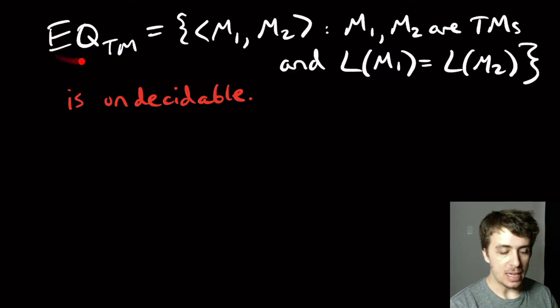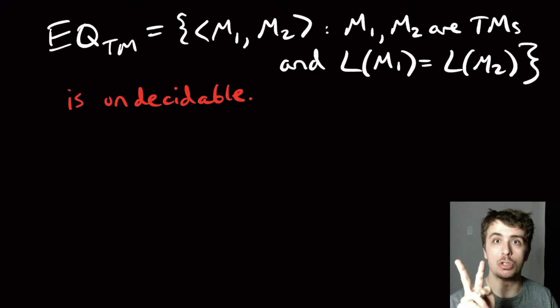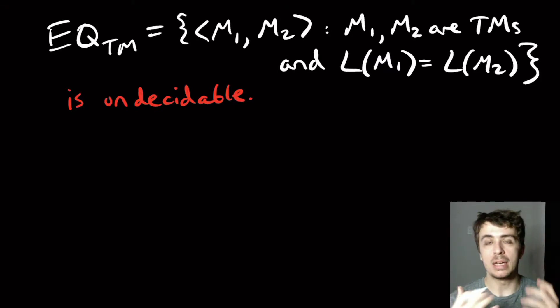The problem here is we want to figure out whether these two Turing machines do the same thing. So if I want to have two programs and figure out whether they do the same thing, that's equivalent to the EQTM problem. And today we'll be showing that it is undecidable.